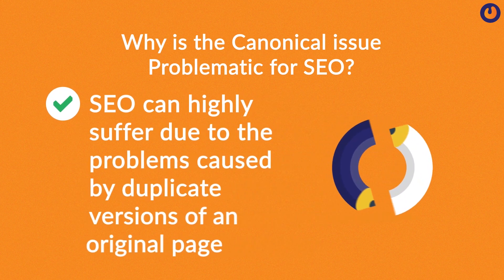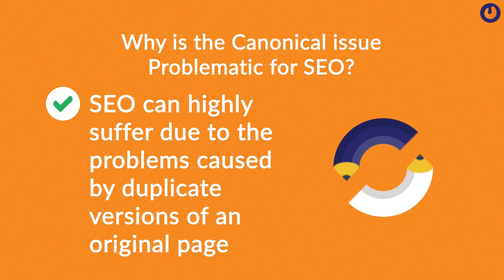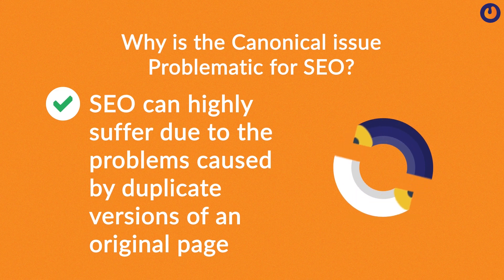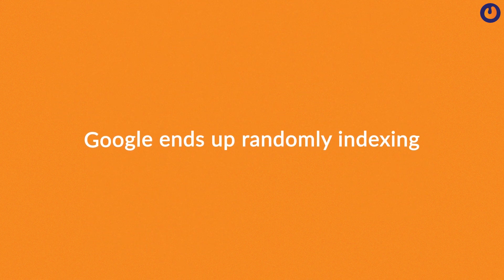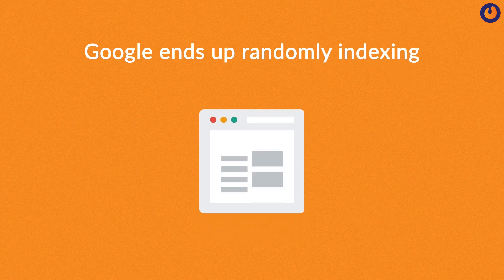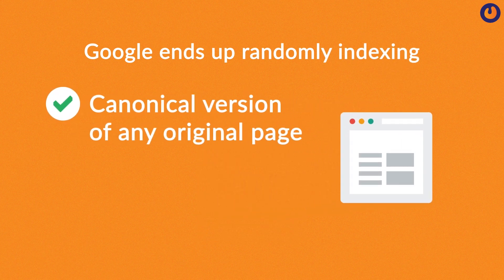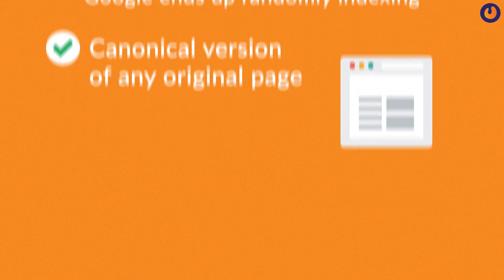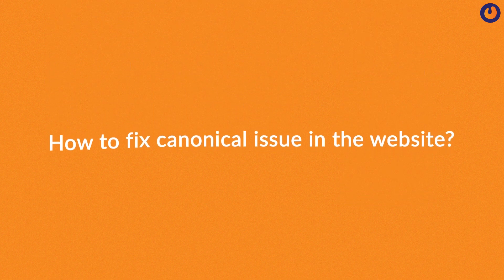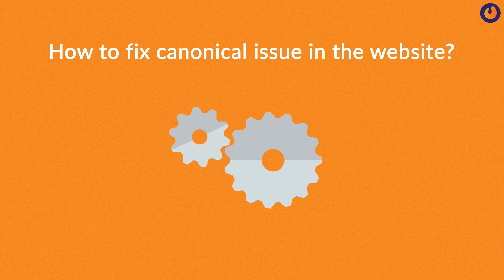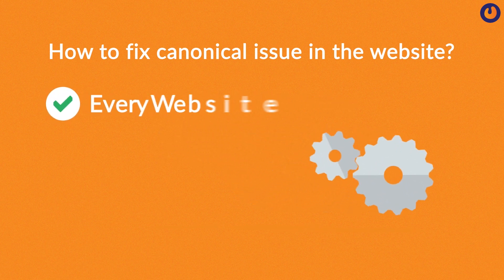Why is the canonical issue problematic for SEO? SEO can highly suffer due to problems caused by duplicate versions of an original page. Upon discovering duplicate pages, Google ends up randomly indexing a canonical version of any original page and dismisses other pages. Canonical issues also have the tendency to dilute your link equity.